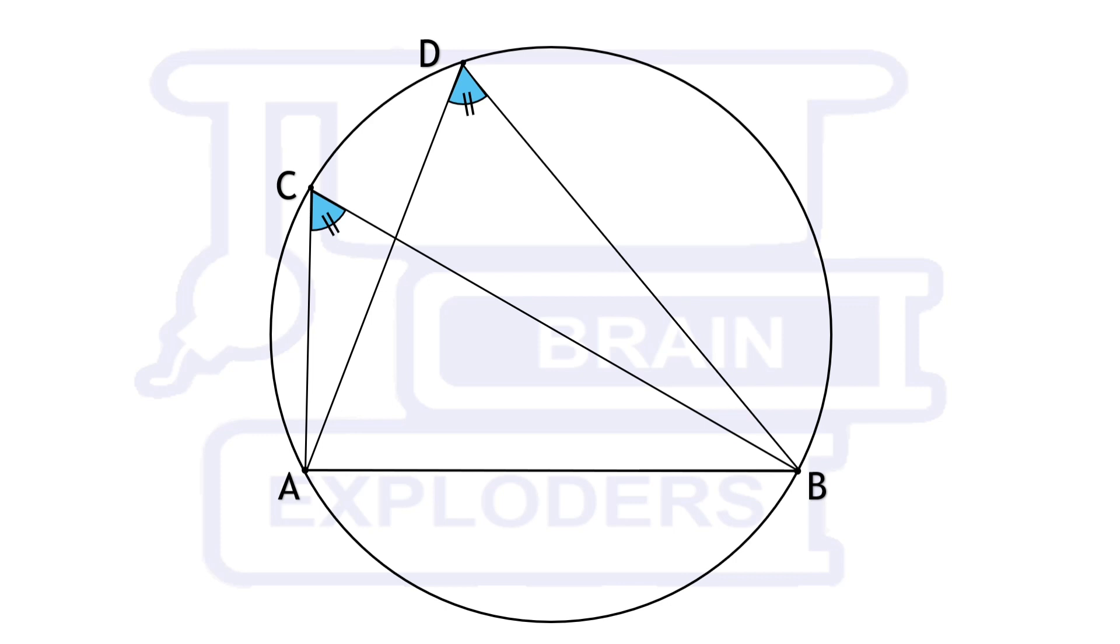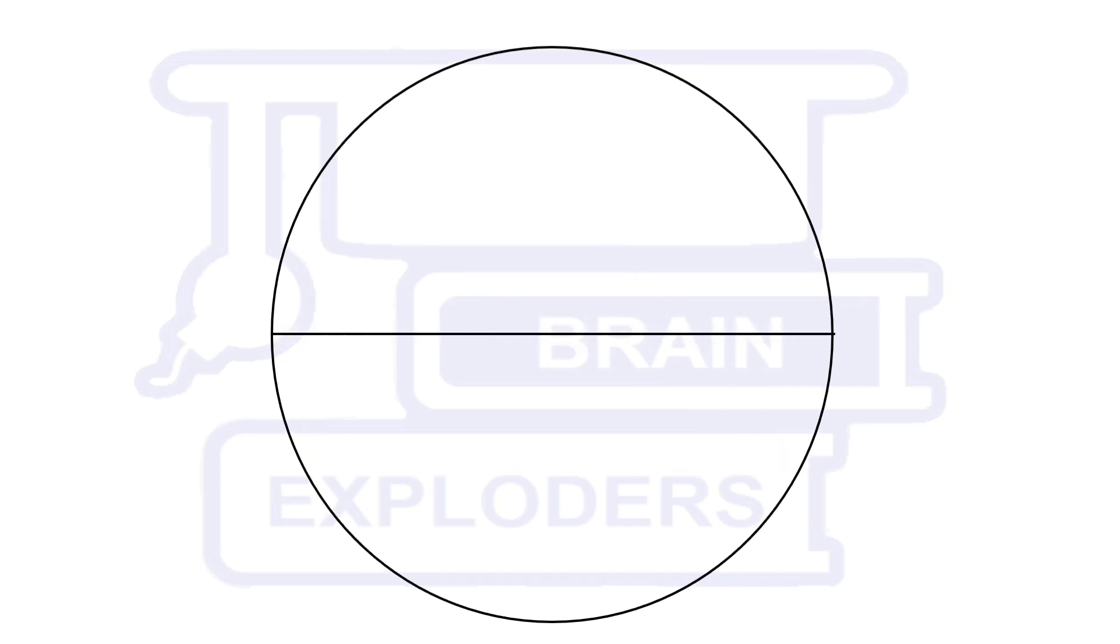The converse is also true. Any chord of a circle subtends the same angle on all the points of the circle which are on the same side of the chord. If this chord is the diameter, then the angle subtended is a right angle.